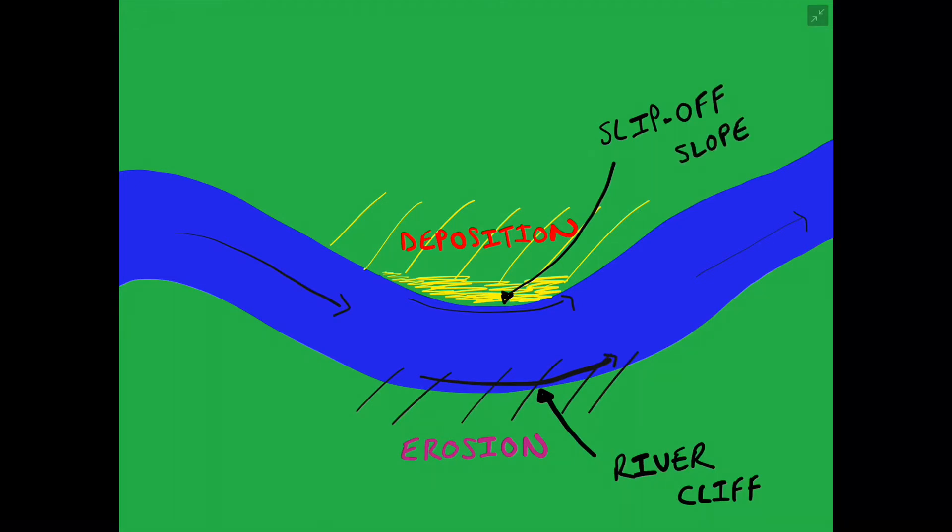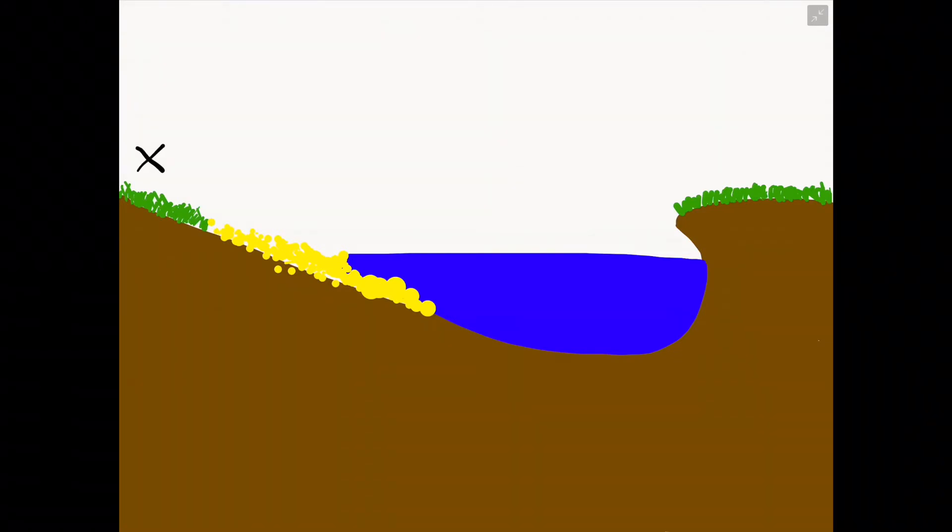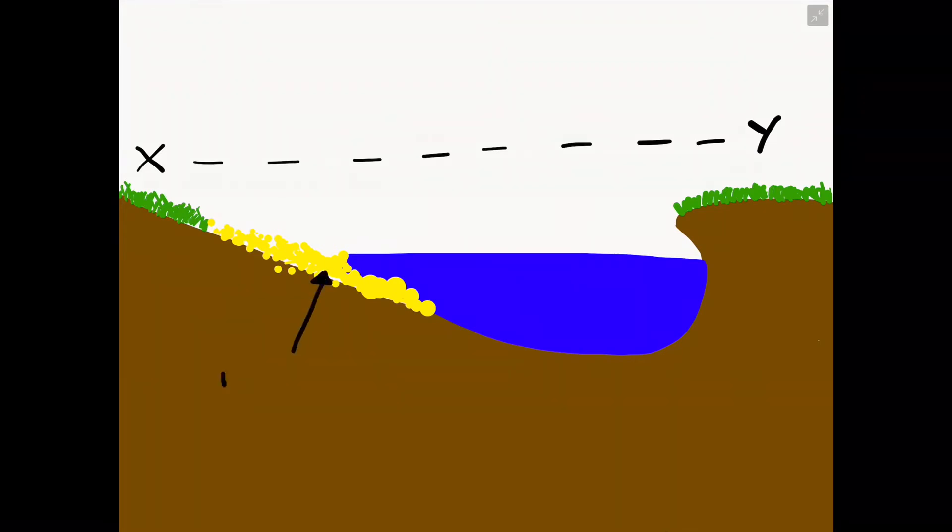So if we were to think about the cross section of a meander and literally draw a line from X to Y either side of the bend of the meander, we would get a diagram or some type of shape that looks similar to on the screen. So I've put the X and the Y on there so you can refer to the previous diagram of the meander bend and compare it to this cross section of a meander.